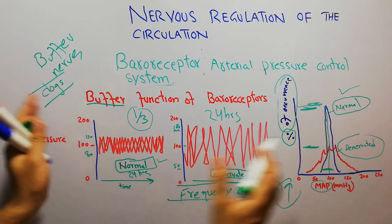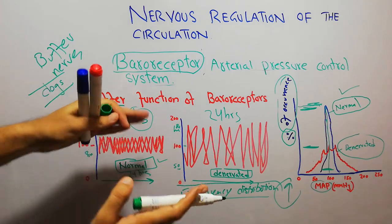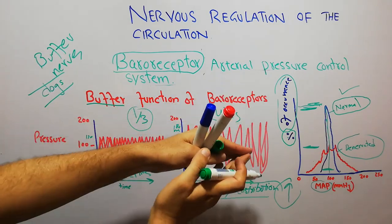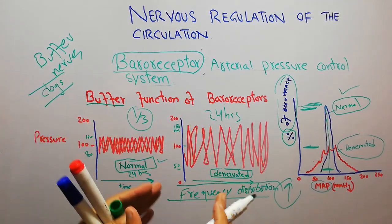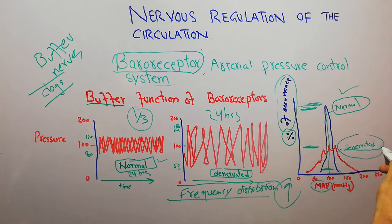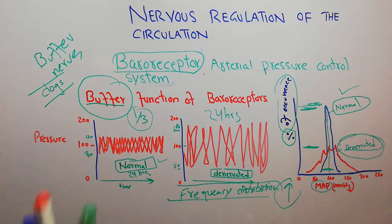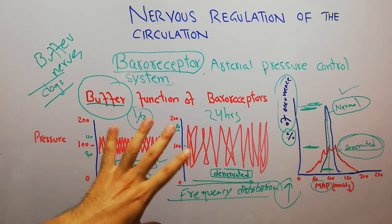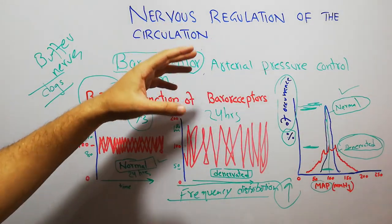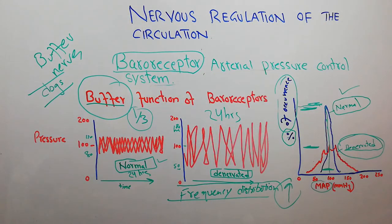These two experiments basically prove that baroreceptors try to keep the arterial pressure within a narrow normal range. Once the baroreceptors have been removed, variation starts in the mean arterial pressure and the base of the frequency distribution broadens because the buffer system which decreases variation has been removed. The role of the baroreceptor is to maintain mean arterial pressure, and the baroreceptors are connected with the nervous system — the brain and spinal cord — proving that the nervous system is important in regulation of the circulation.